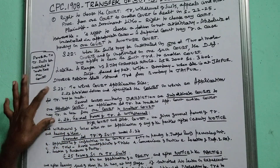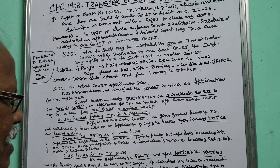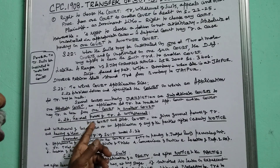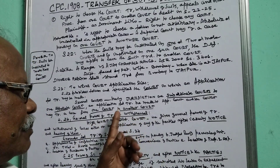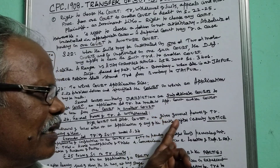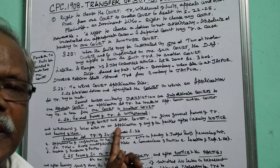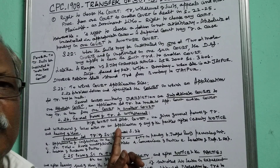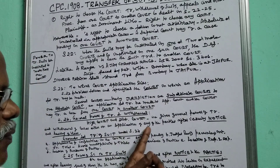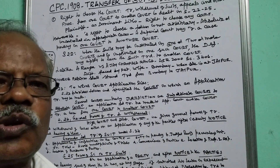Section 24 deals with the general power of transfer and withdrawal. Generally, the High Court and District Court have the power to transfer and withdraw cases. They are given general power of transfer and withdrawal of cases either on an application made by any of the parties, after issuing notice and hearing them. A case can be transferred from a district court to a subordinate court or other court, or from a High Court to other courts.